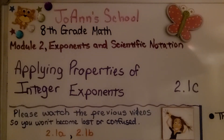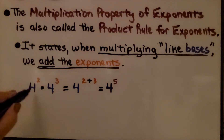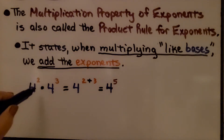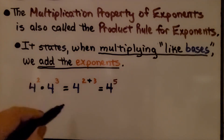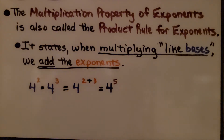Applying properties of integer exponents, Lesson 2.1c. We're going to talk about some of the rules for exponents. The multiplication property of exponents is also called the product rule for exponents. It states when multiplying like bases, we add the exponents. We have 4 to the second power multiplied by 4 to the third power — we just add the 2 and the 3 to get 4 to the fifth power.